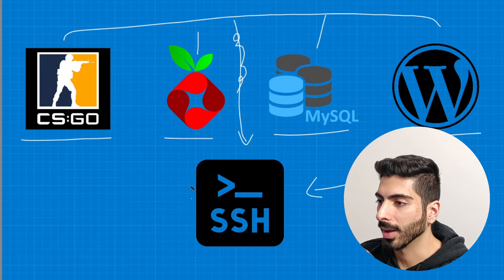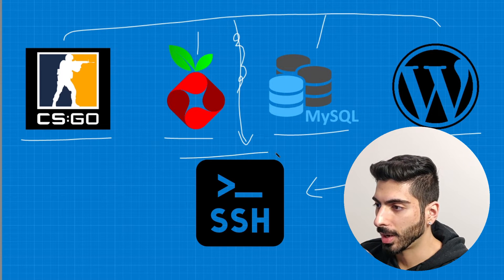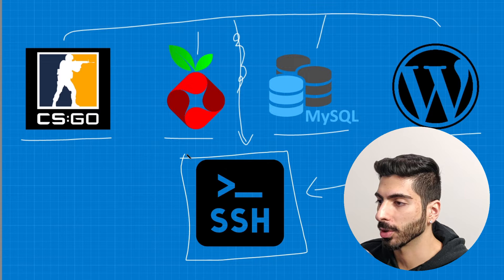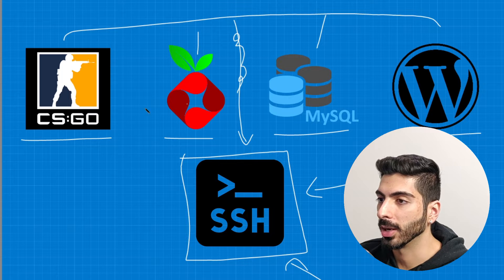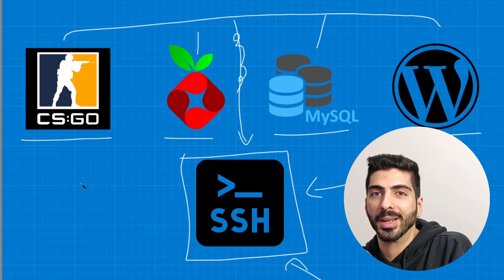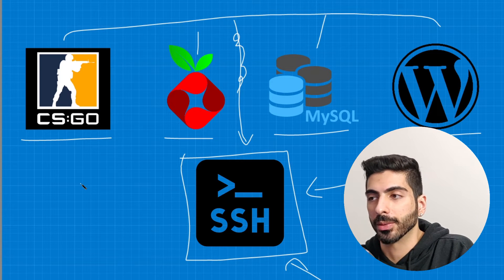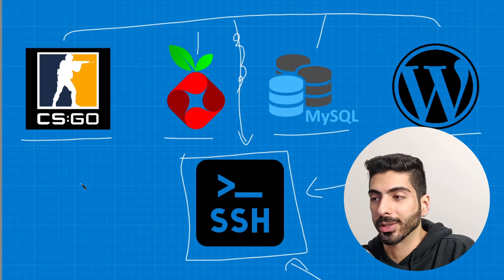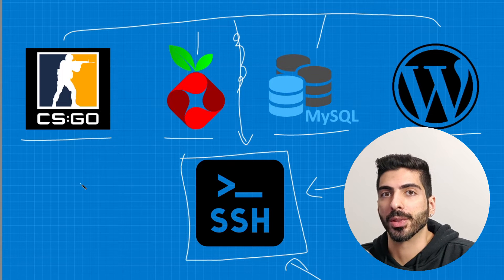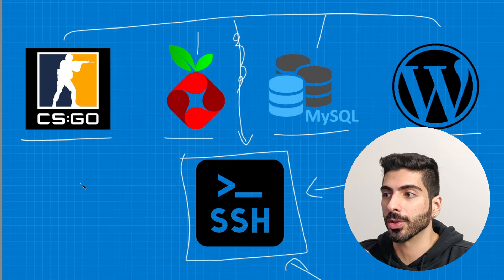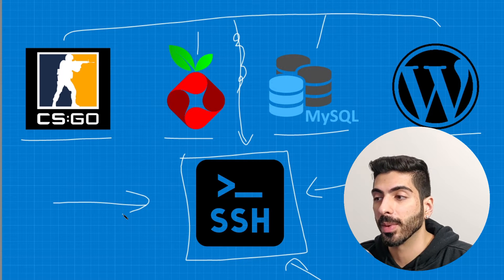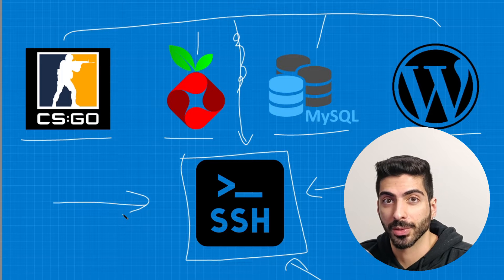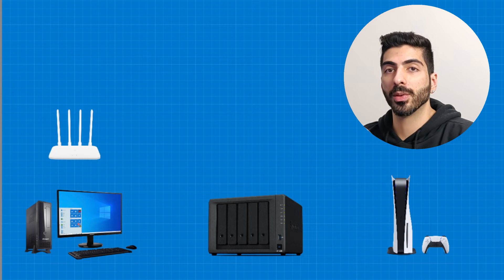So now the only way you will be able to access these servers is through this one bastion server. We try to harden the security of this one as much as possible, so you're only going to be making connections to this one and then jumping your connection from here to any of your other servers. You only really need to worry about the security of one server, and the best part is that you can audit all of your connections through this one bastion server.